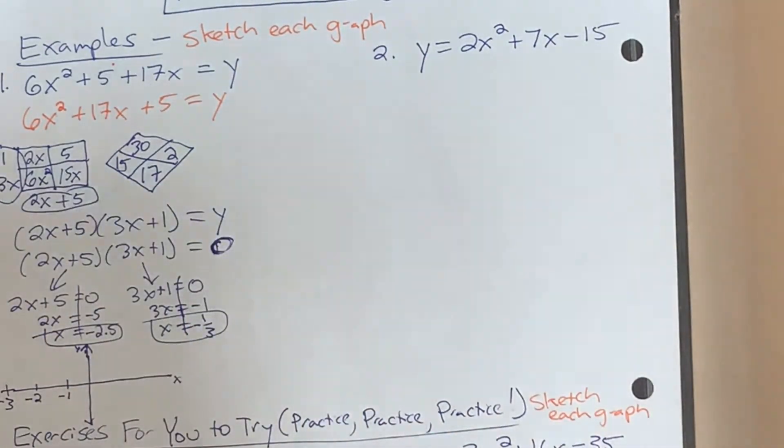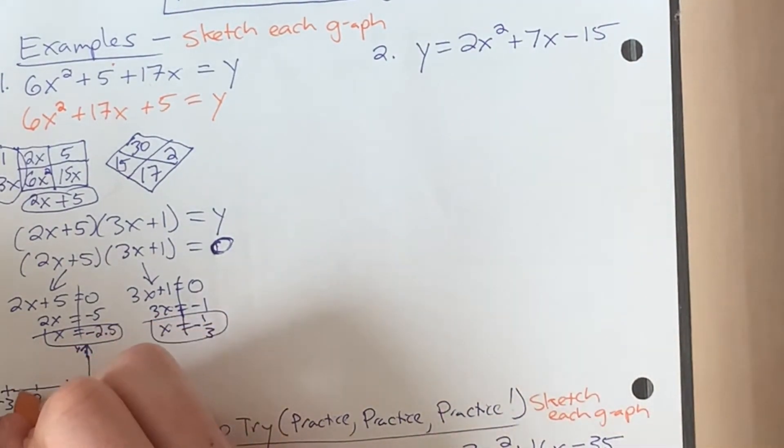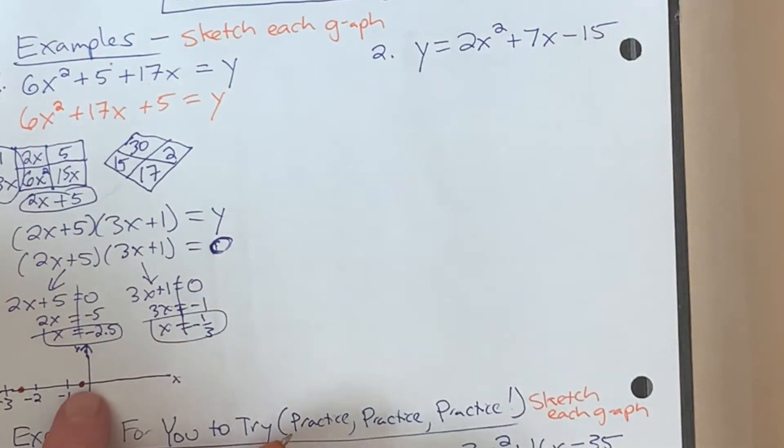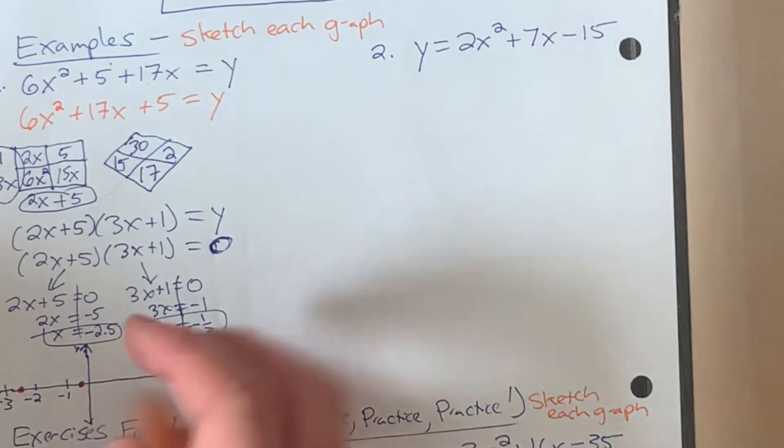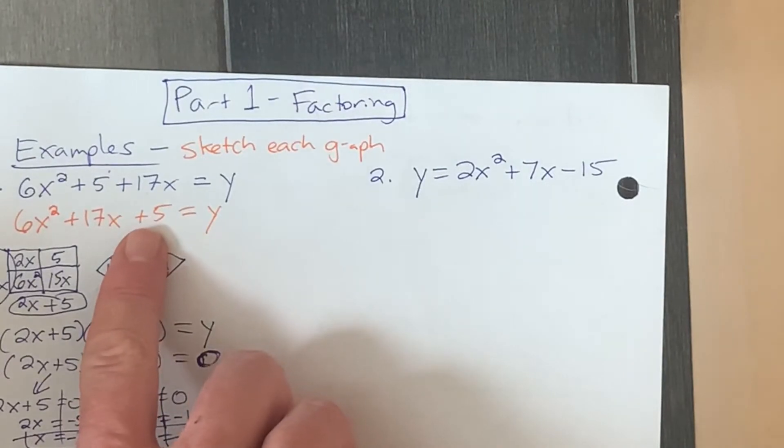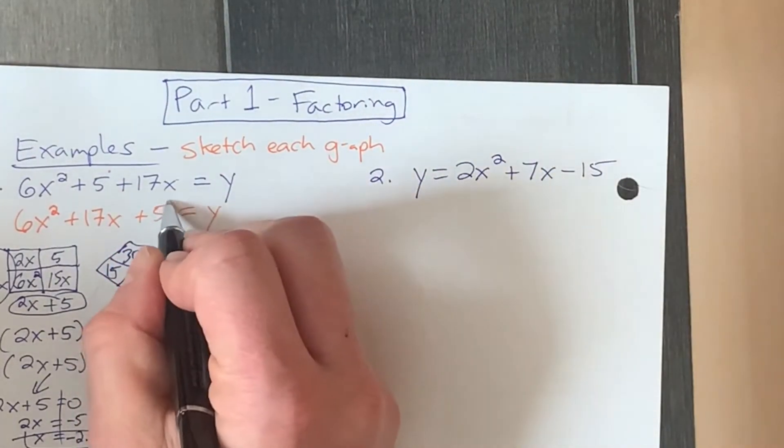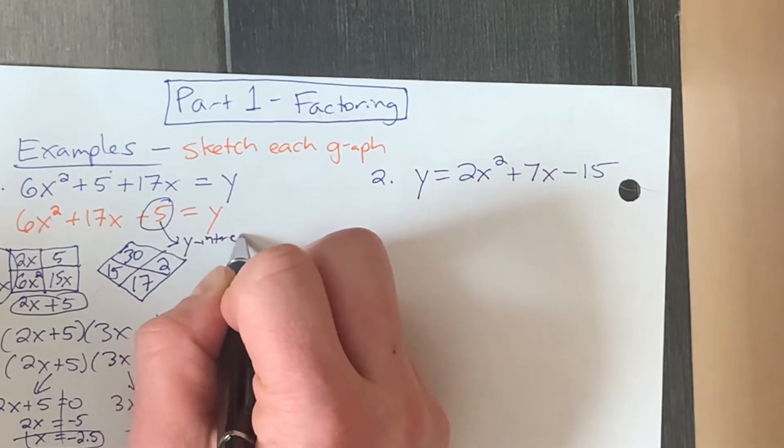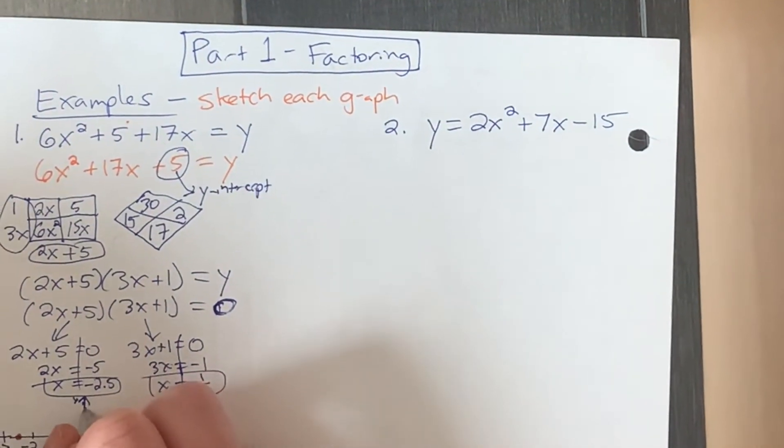So we would know on this graph that there would be one x-intercept at negative 2.5, and another x-intercept at negative one third, right here. And finally, a little bit hard to see. You could solve for the vertex. We're not gonna do that right now. But let's put the y-intercept. So another thing, another reason why I wanted to change the standard form is that we see here, our last term here, our constant term, that's of the standard form, that's gonna be our y-intercept. So we'd have a y-intercept up here at 5.